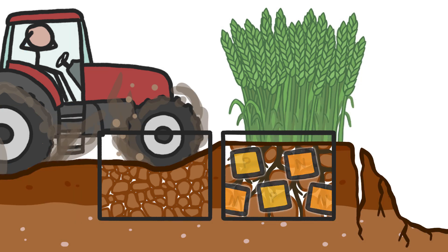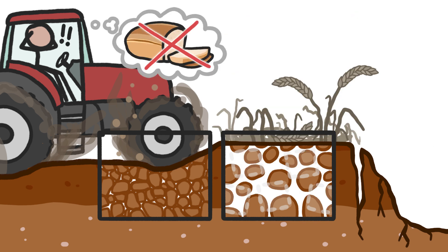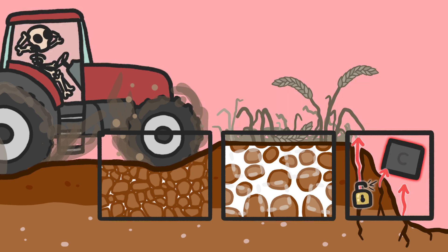If certain nutrients get depleted, soil loses its ability to support life. And soil that can't support life can't support us. It can't grow the food we need to stay alive, or store the carbon needed to stave off climate change.